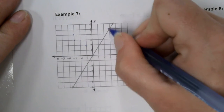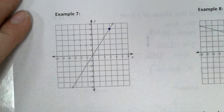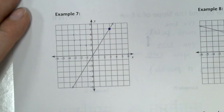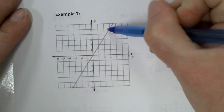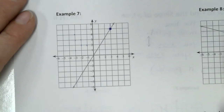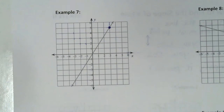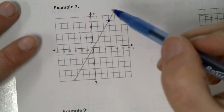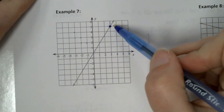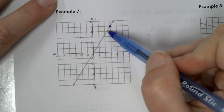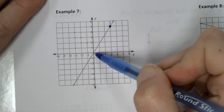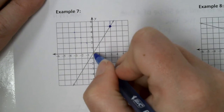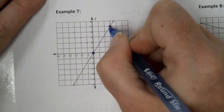That point goes perfectly through that grid line. Do you see that? See this intersection back here? That point goes perfectly through it. So now I need to find another point that goes perfectly through an intersection. Working my way down and looking for perfectly through an intersection — how about right there? Zero, zero. So these are the two points that I'm going to use.